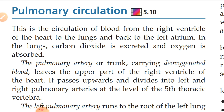The pulmonary artery originates from the right side of the ventricle and leaves its upper part. It passes upward and divides into the left and right pulmonary arteries. The pulmonary artery and pulmonary trunk divide into two parts because blood has to enter both lungs. This division occurs at the level of the fifth thoracic vertebra.